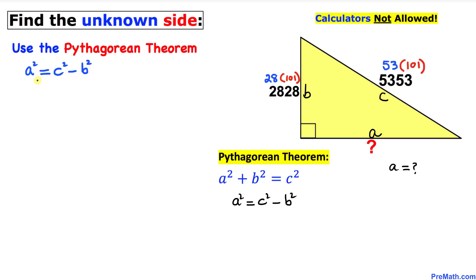In the next step, let's go ahead and fill in the blanks. So a² equals, in our case c is 53, so this is going to become 53² minus b, in our case is 28, so I'm going to say 28².